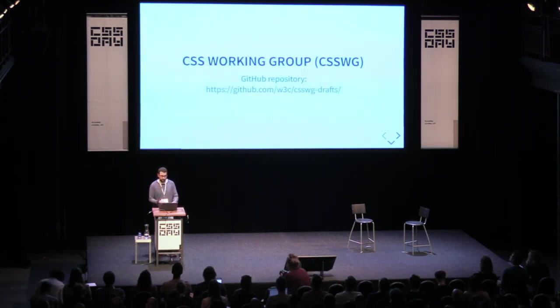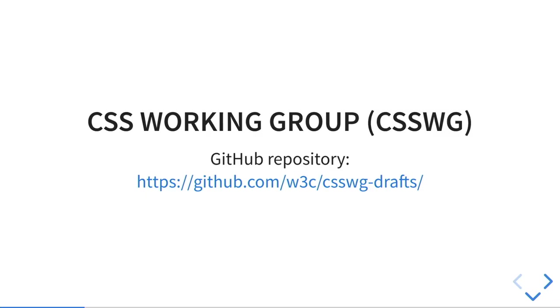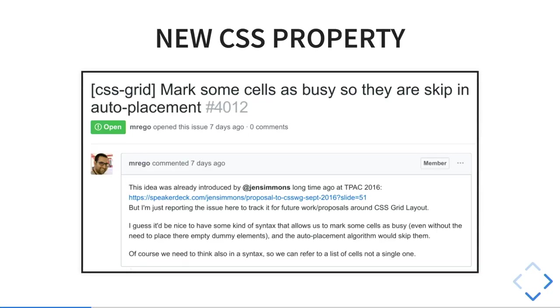These steps don't have to be in this exact order. So let's start with the CSS working group. You probably already know that there is a GitHub repository with issues, and you can go there, comment on the issues. All the discussions that happen in meetings get recorded and appear on the different issues. So you can follow discussions and participate there. For example, I can create a new issue like: a new CSS property that can mark some cells as busy so you don't use them when auto-placing items.